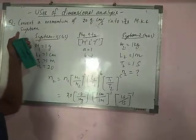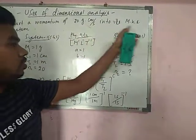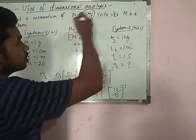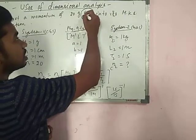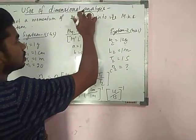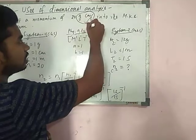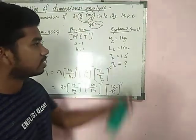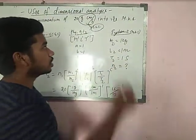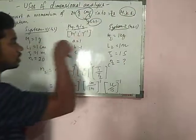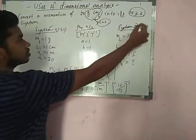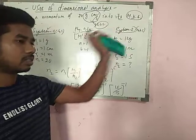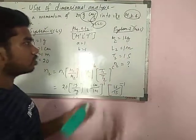The question is: Convert a momentum of 20 gram-centimeter per second into its MKS system. We can write here system 1 and system 2. System 1 is CGS, system 2 is MKS. I have written this for your better understanding.